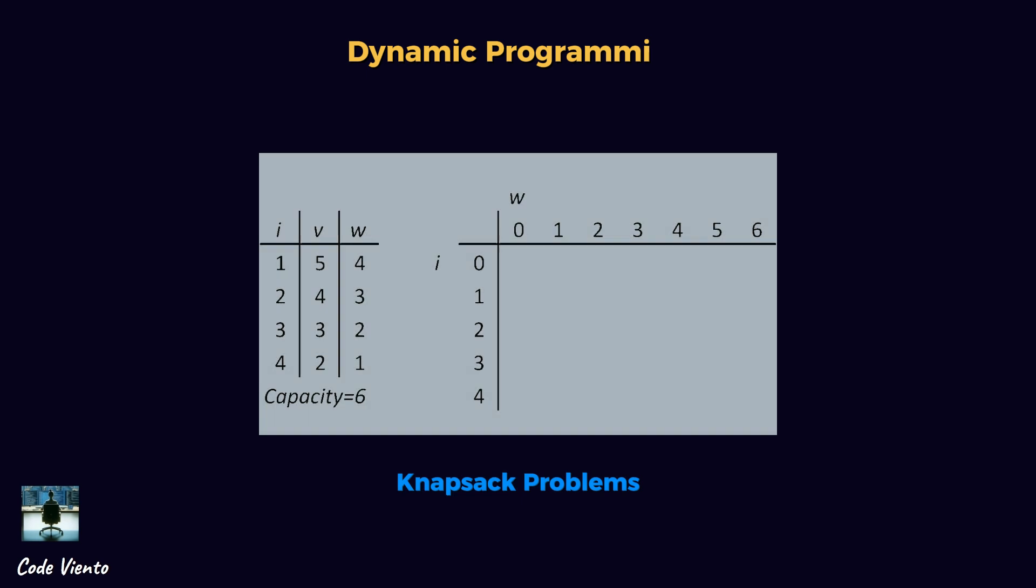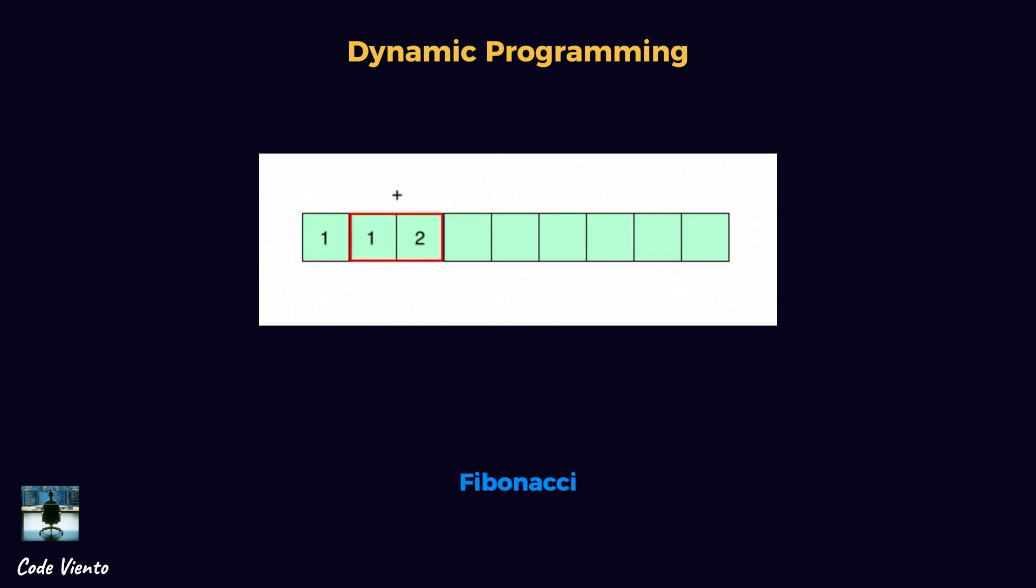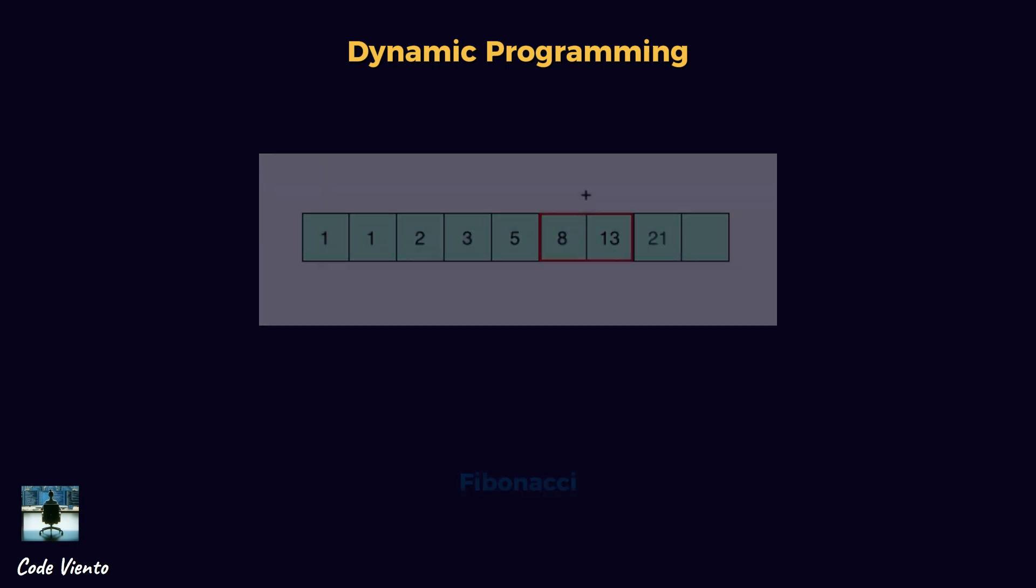Remember the past, optimize the future. Dynamic programming is all about breaking problems into smaller overlapping sub-problems, solving them once, and storing the results to avoid redundant work. It's a huge optimization over brute force. Identify overlapping sub-problems (example: Fibonacci sequence). Solve smaller problems first. Store results (memoization) to reuse later. Build up the final solution efficiently.